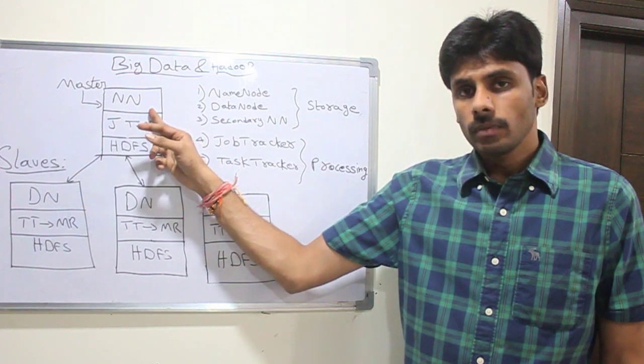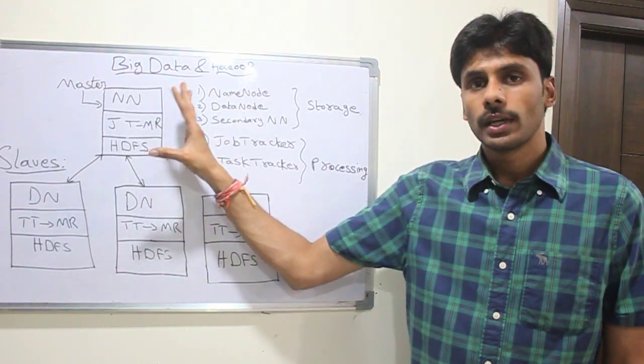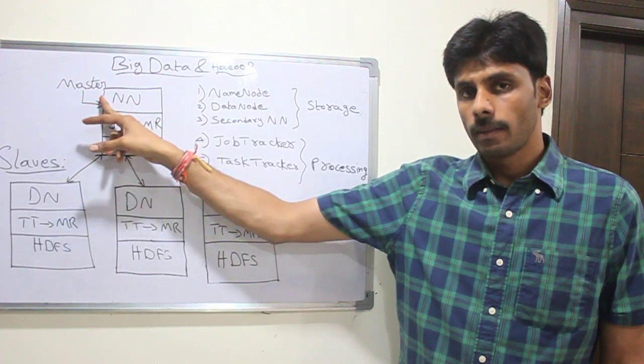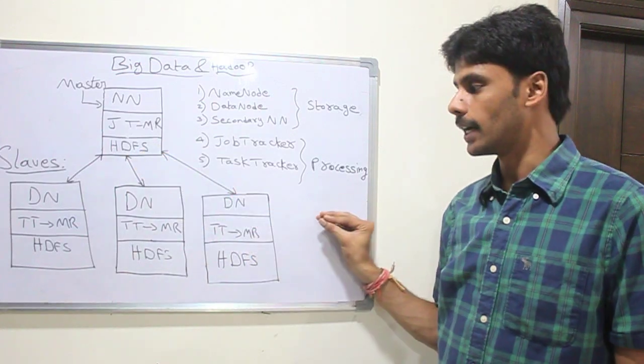NameNode takes care of the data and it is installed, usually NameNode is installed in the master machine, and then all the slaves will have a DataNode to which the NameNode will distribute the data.